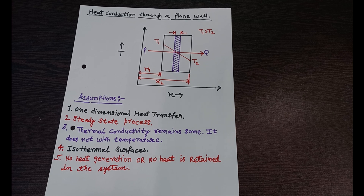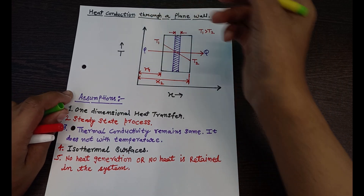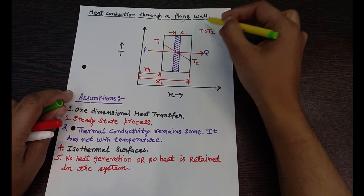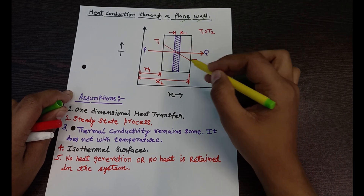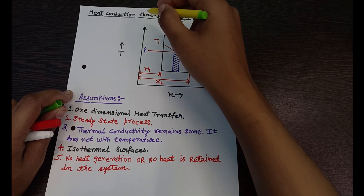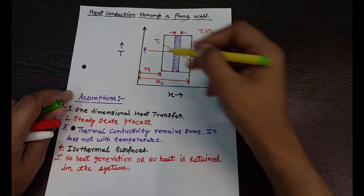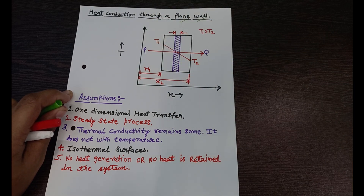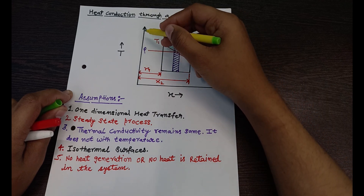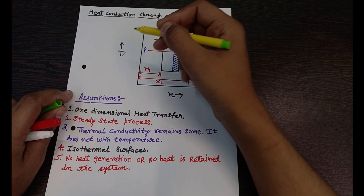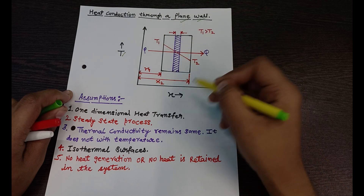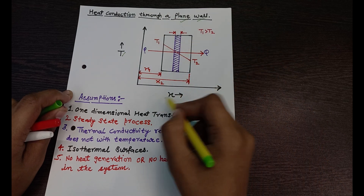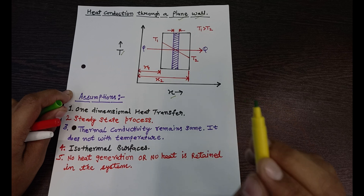Hello everyone, welcome to LearnCHE. Today we will talk about heat conduction through a plane wall. This is our front view of the plane wall, with the y-axis representing temperature and the x-axis representing the thickness of the wall.